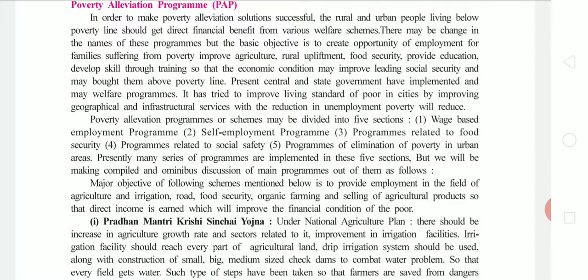There are many changes in these programs and more planning and schemes are laid out, which means unemployment is reduced. The major objective of the following schemes is to provide employment in the field of agriculture and irrigation, roads, food security, organic farming and selling of agriculture products so that direct income is earned. There are many schemes in which people get employment, irrigation facilities, and support for food security and organic farming for farmers.